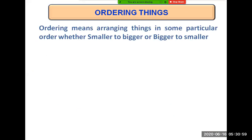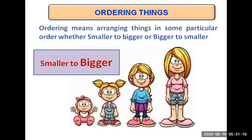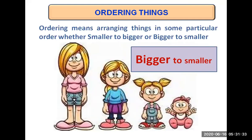Before starting today's lesson, we need to understand what ordering things means. Ordering things means arranging things or putting things in some particular order, whether we are arranging from smaller to bigger or from bigger to smaller. As you can see, this bunch of kids has been arranged in an order where the smallest kid comes first, then bigger, and the biggest kid is at the last place. The same kids can be arranged the other way, from bigger to smaller.